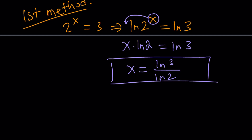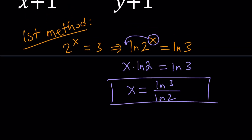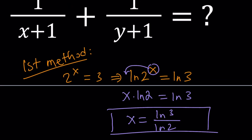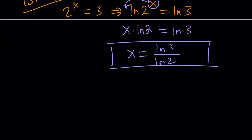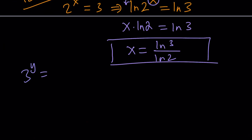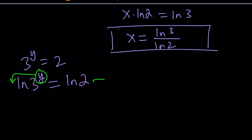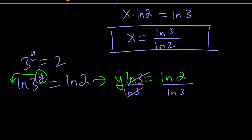So we found the numerical value for x. Obviously you can plug it into a calculator, but we don't need to — this is exact. Let's go ahead and take a look at y. 3 to the y equals 2. Like before, let's ln both sides, and then bring this to the front, and then divide both sides by ln 3. And that's going to give us the value of y.